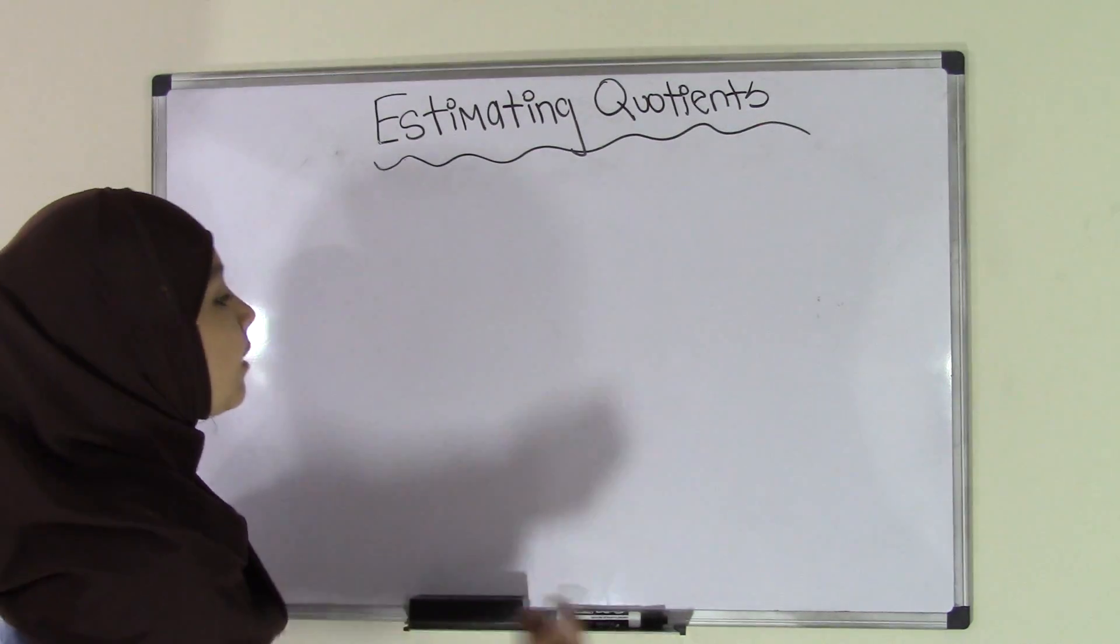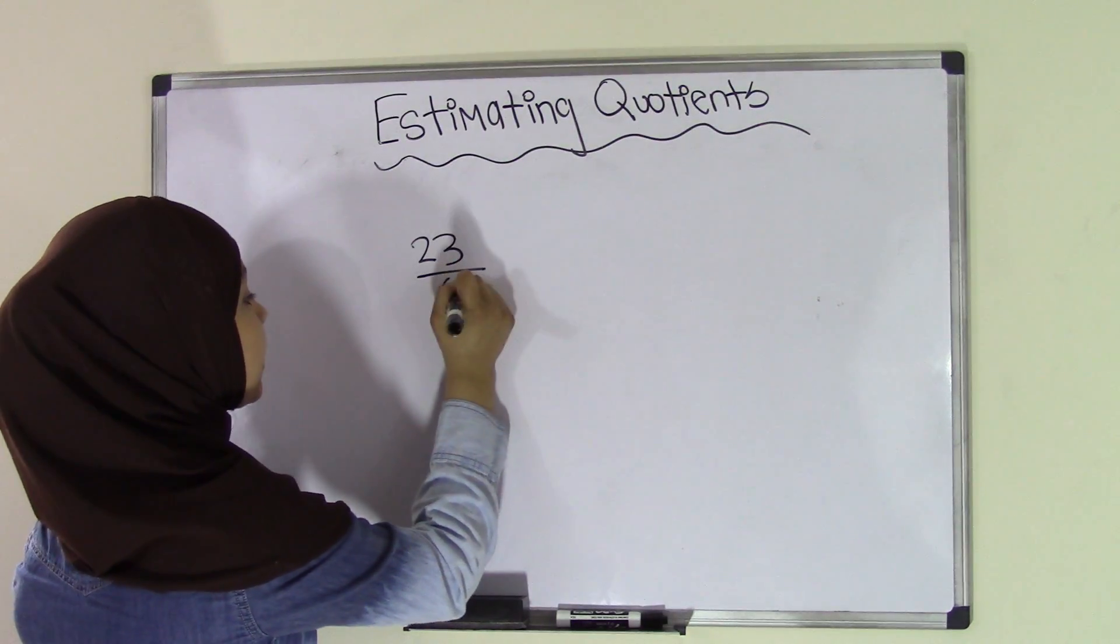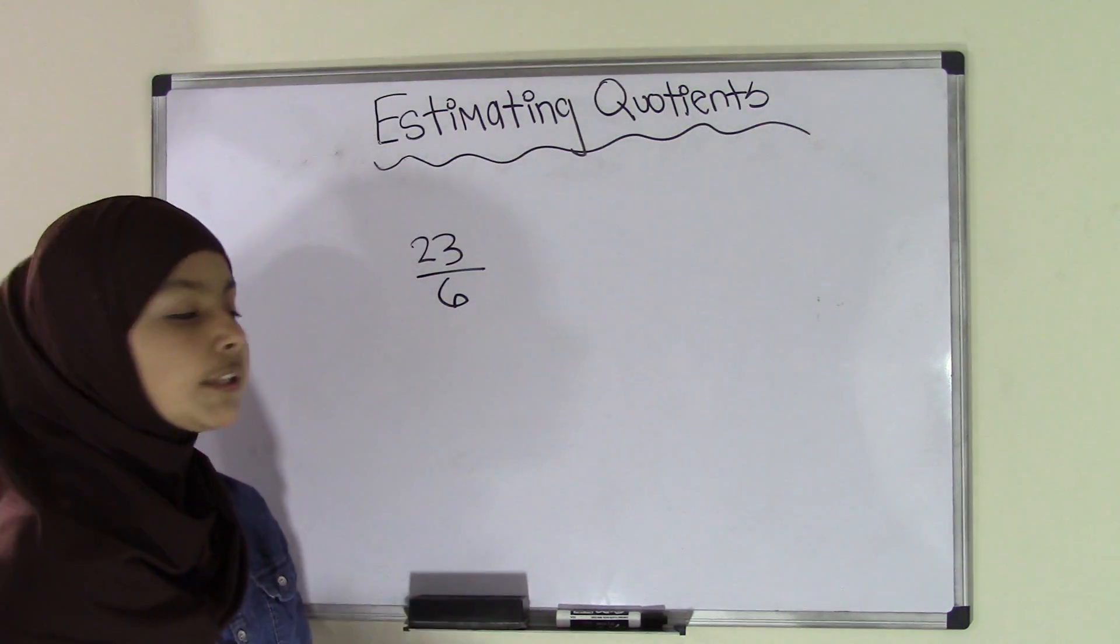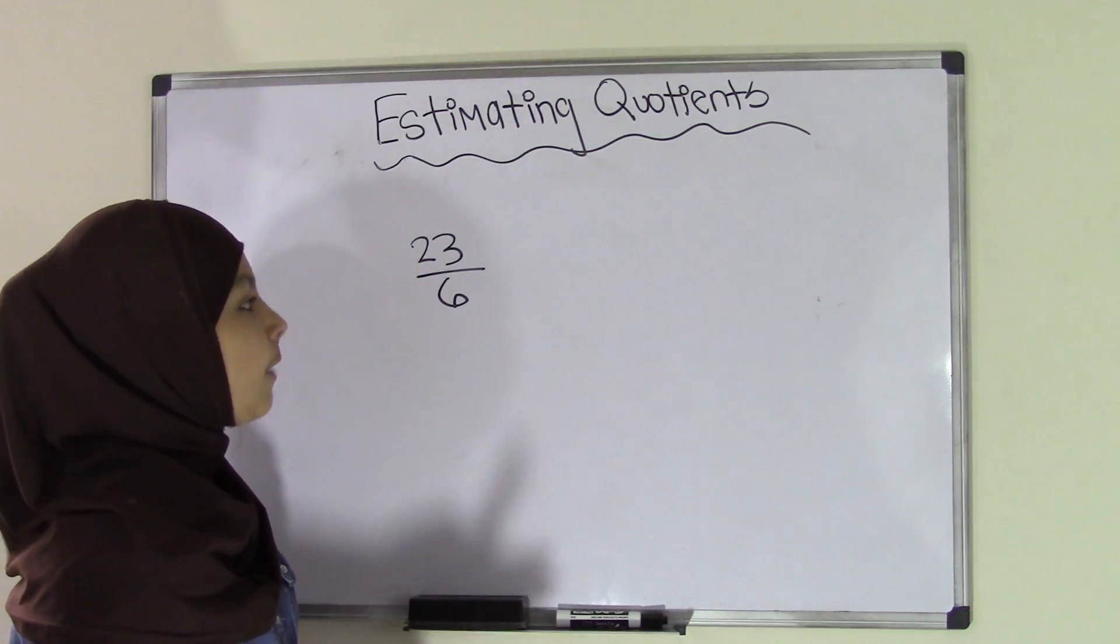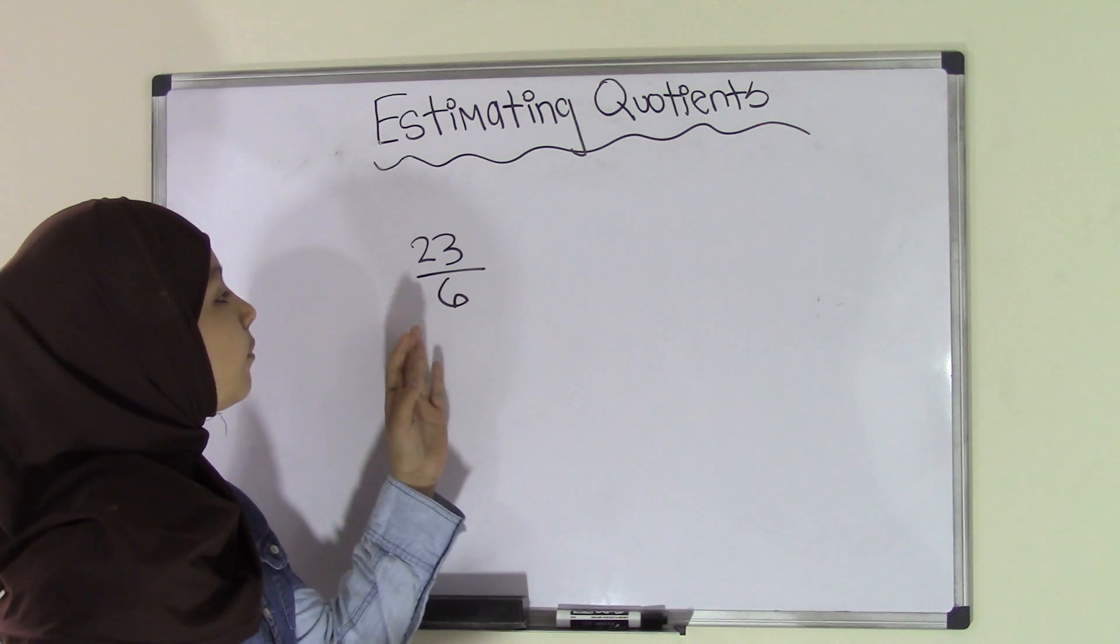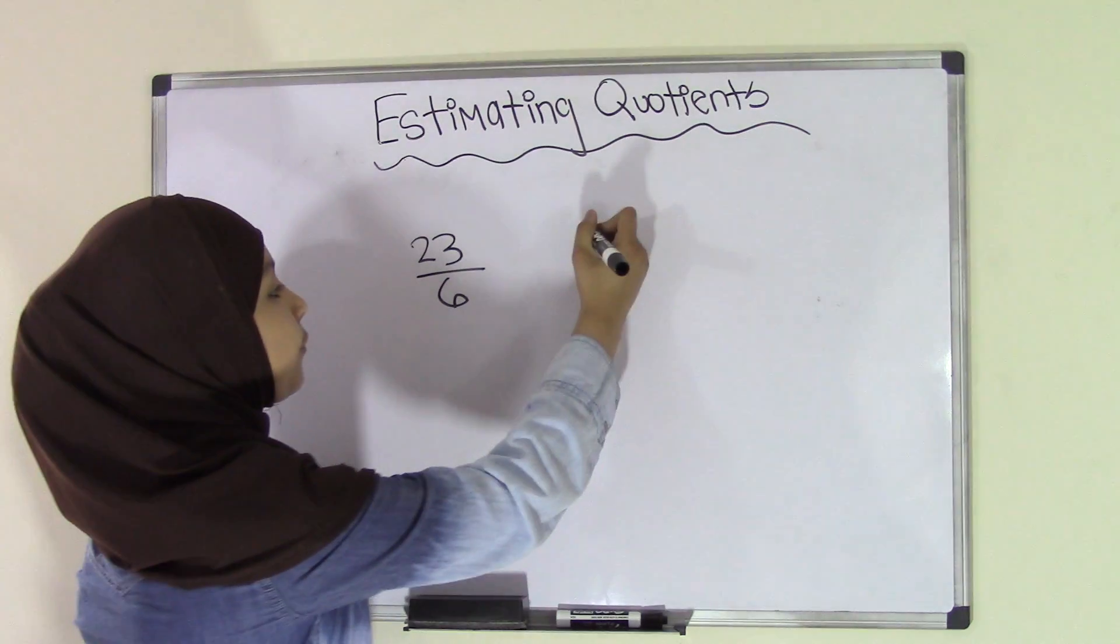So let's take a look at an example. Let's say we have 23 divided by 6. The first thing that we're going to do is create two ranges of data, or numbers, that will represent the numbers that come in between 23 and 6.